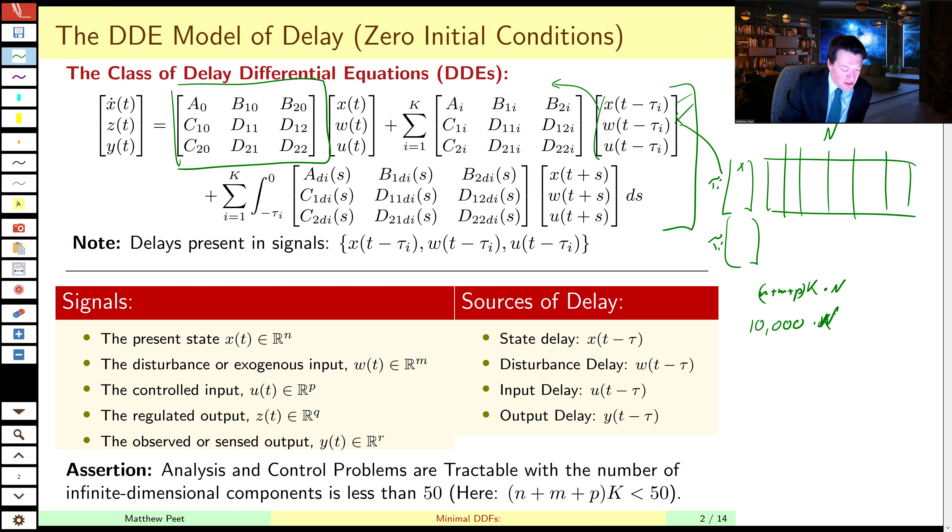And so we find that the software tools that we are thinking about generally are tractable when the number of states times the number of delays is less than 50. So 50 infinite dimensional components is sort of the limit of what is tractable given current technologies.